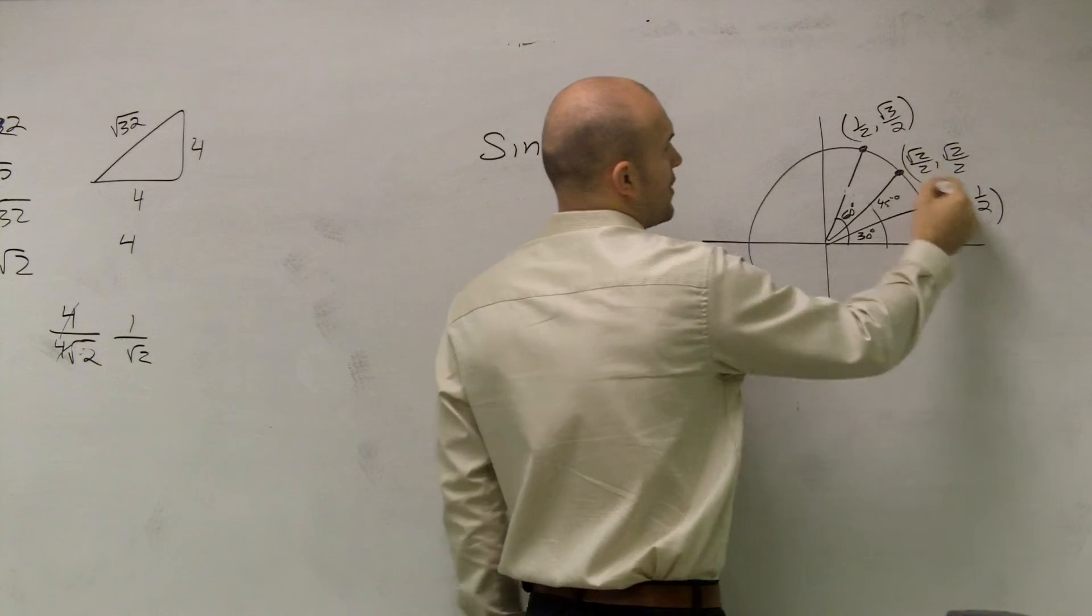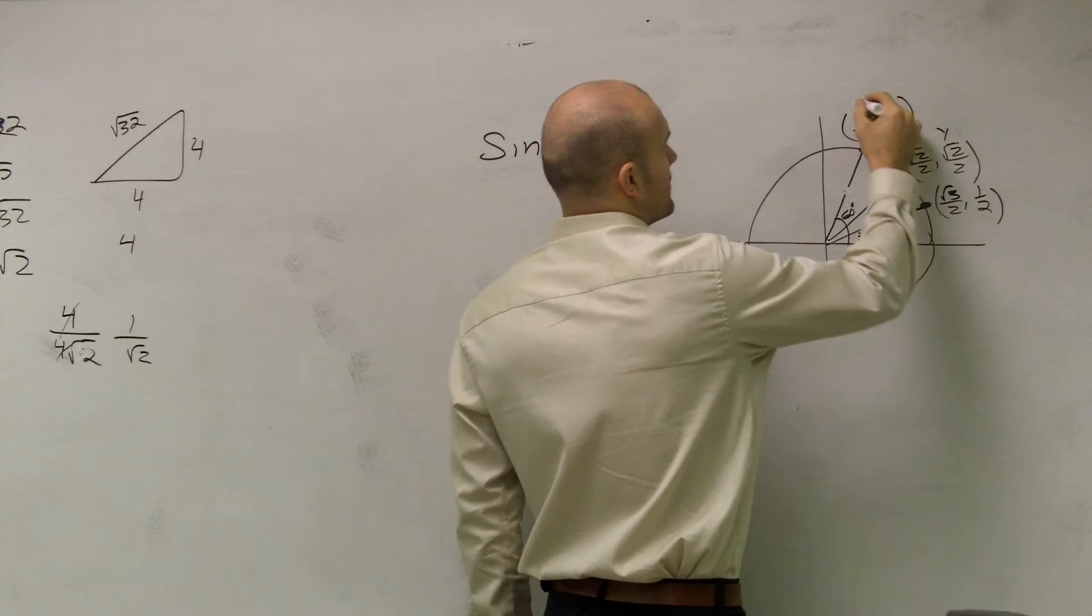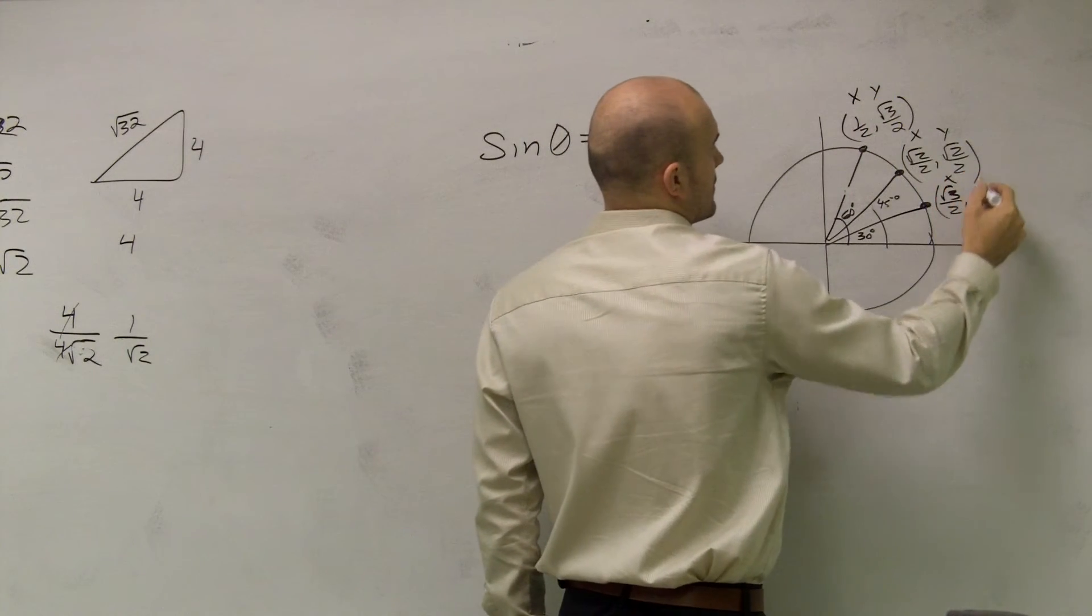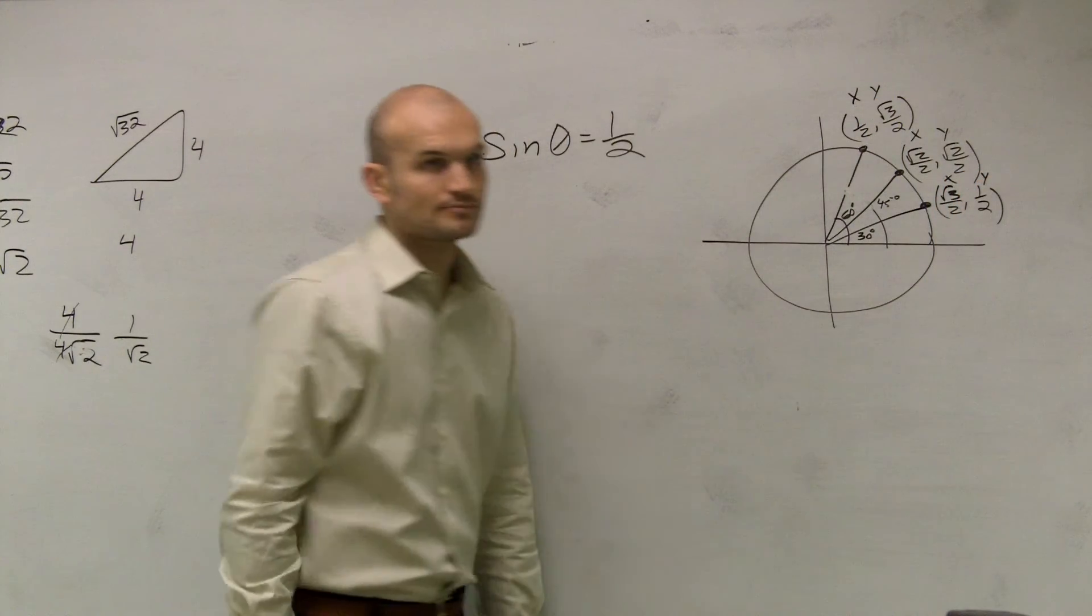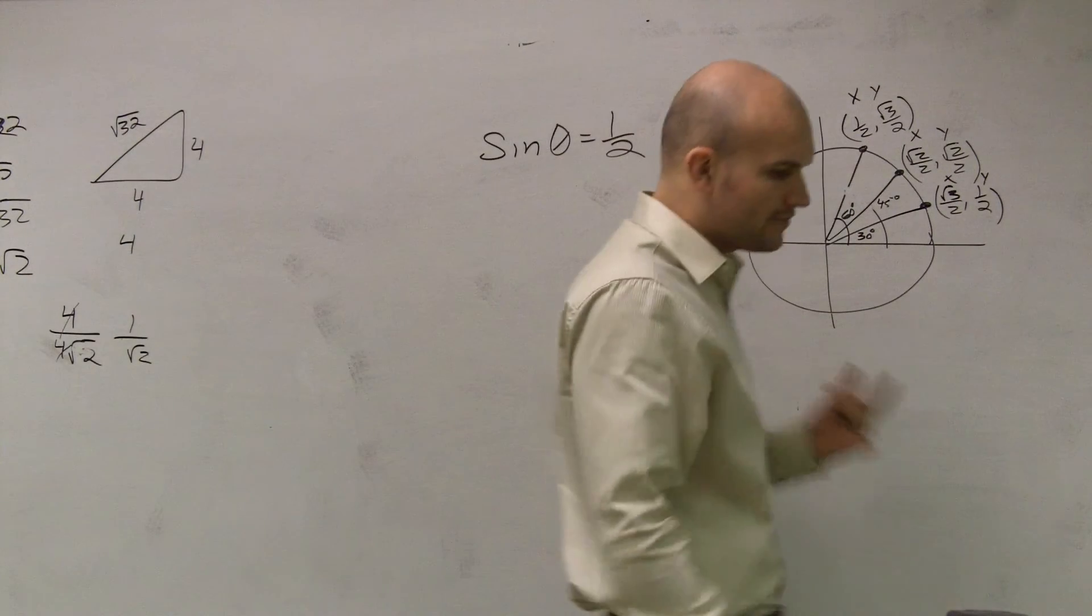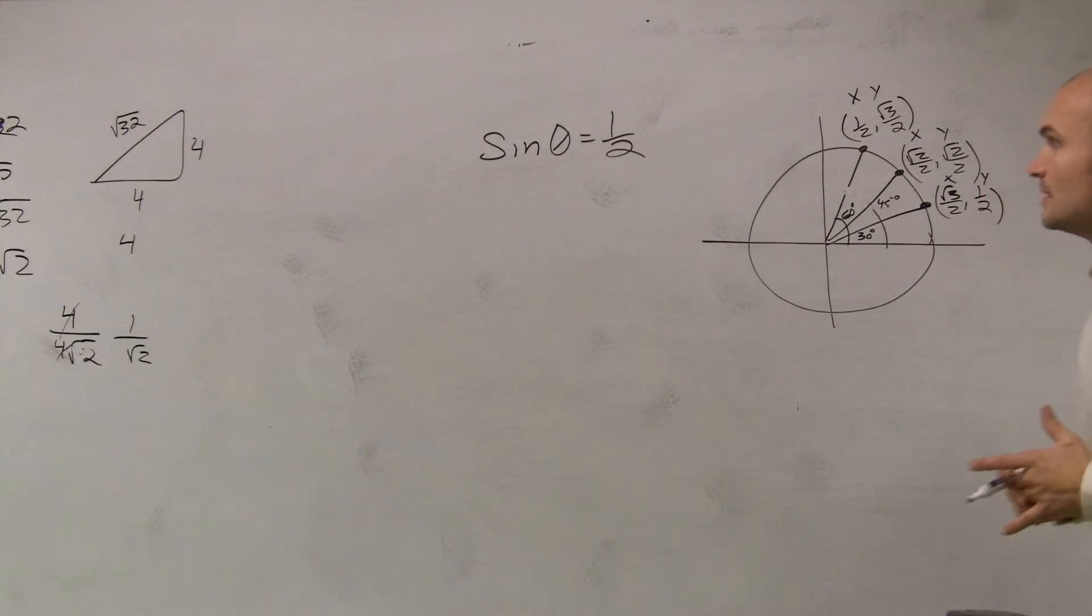Now remember, each one of these points has an x and a y-coordinate. So since all three of these points have an x and y-coordinate, remember sine represents your y-coordinate of your point. So where is 1/2 my y-coordinate?